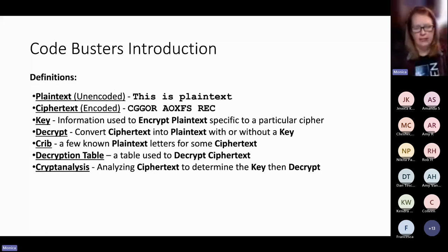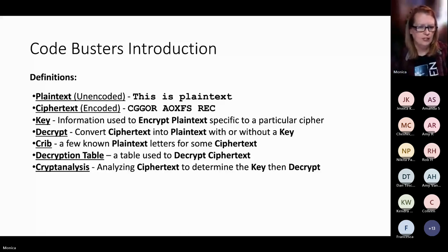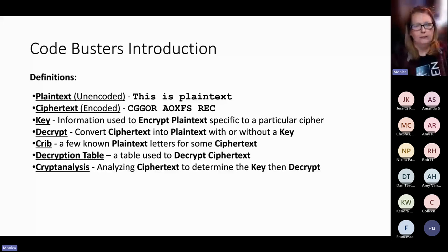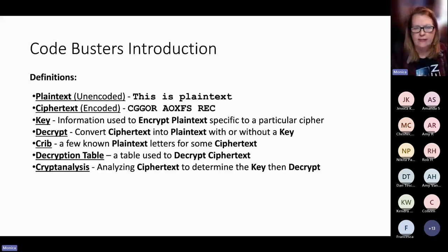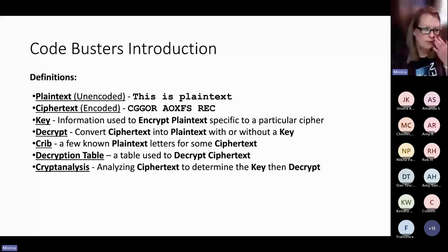First, some definitions you might see when reading up on how to do ciphers. The kids don't need to know these by heart — they don't get tested on them — but it's useful so you know what people are referring to. Plain text or unencoded text is just normal language — English, Spanish, German. Cipher text or encoded text is the letters that don't make any sense that they need to figure out. A key is basically information used to encrypt the plain text — certain ciphers give you a key because there's no way to solve it without one.